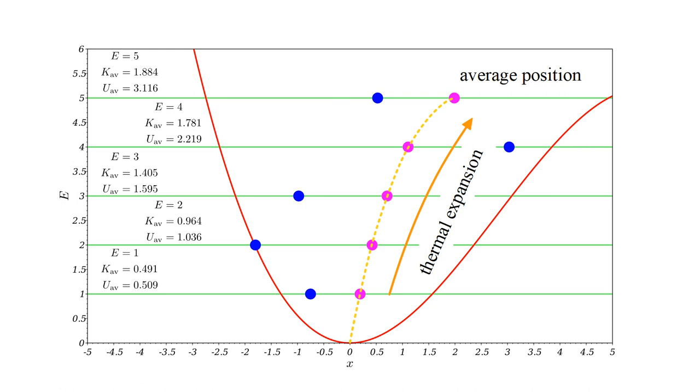Using simulations of motion in an asymmetric potential, we've seen that anharmonic oscillations are characterized by two properties. First, the average distance between atoms increases with energy, explaining the phenomenon of thermal expansion.